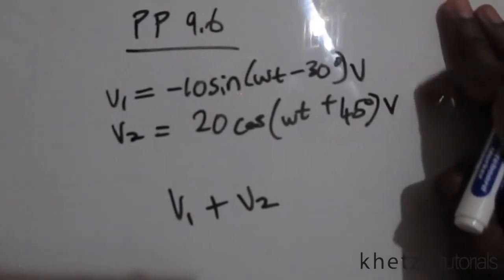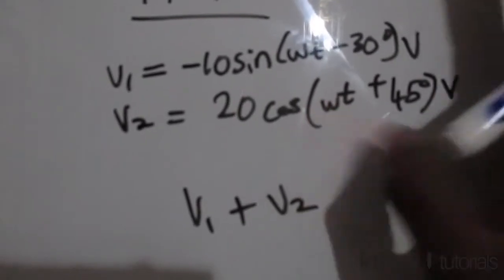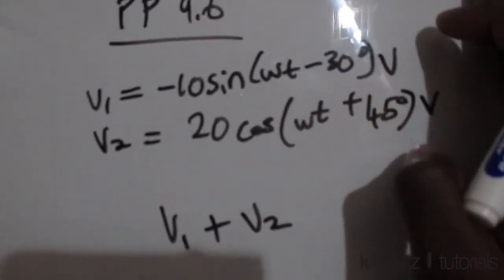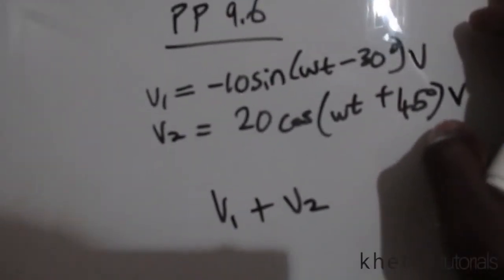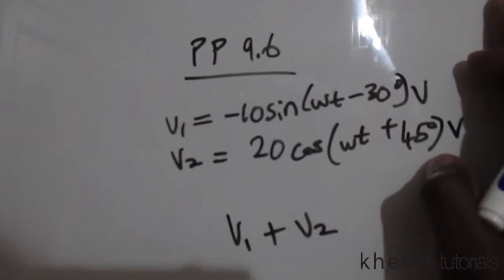Make sure that these two sinusoids are in the same form. The preferred form is the cosine form because that will allow you to transform these two into phasors. Then after transforming these two into phasors, you can simply add them.